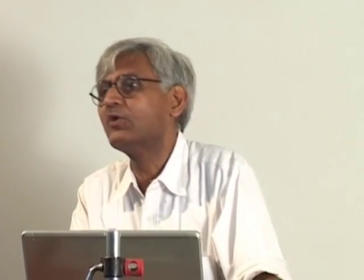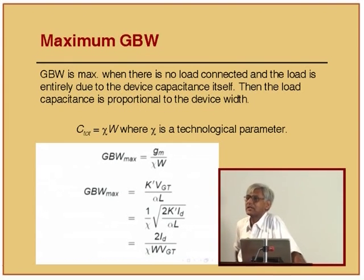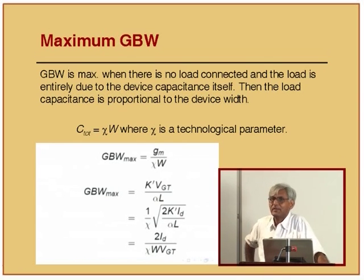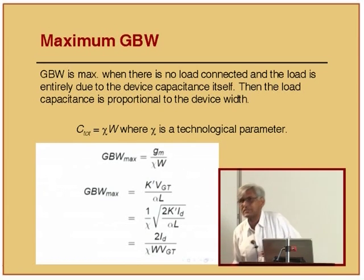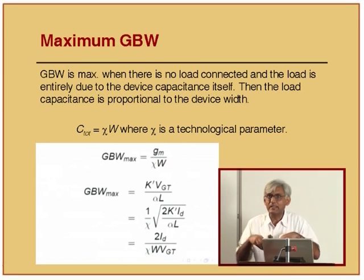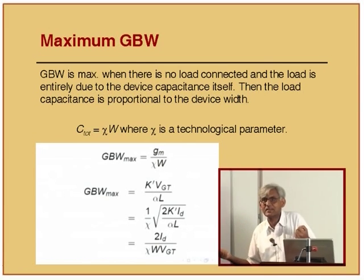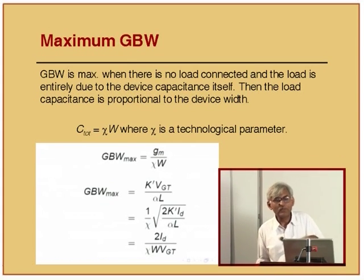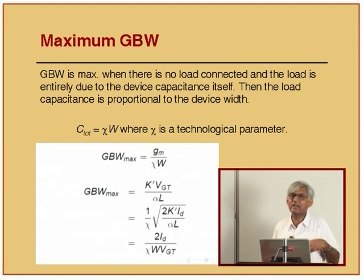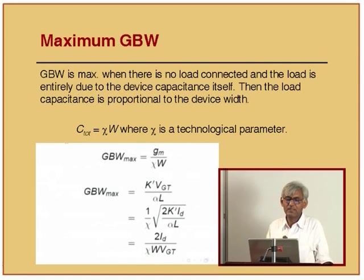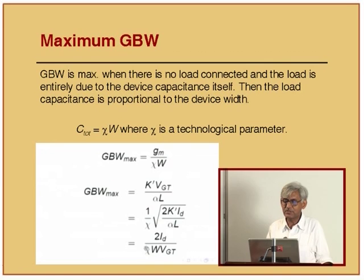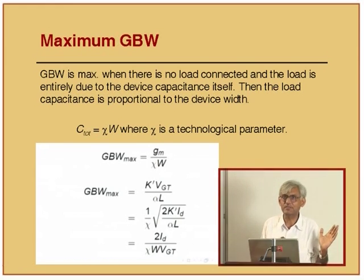Suppose I don't put any load at all - that gives an upper bound on the capability of this amplifier. The self-loading is proportional to the width of the transistor; the wider the transistor the larger the capacitance. Assuming load capacitance is proportional to chi times W, I can calculate GBW_max and get the simple equation: GBW_max equals 2*ID/(chi times whatever). This is absolutely the highest frequency to which you can go with this technology.